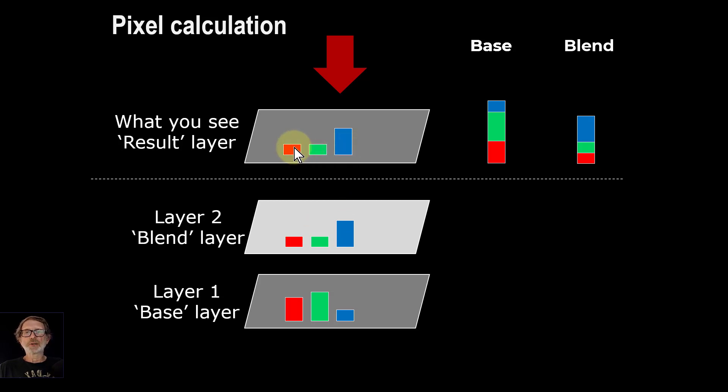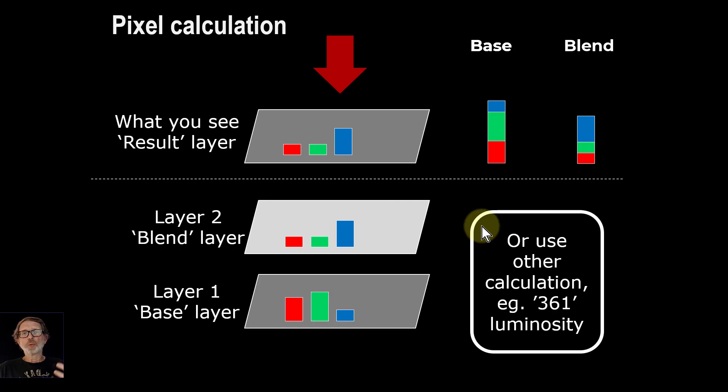There's also we can do calculations at the pixel layer level in all sorts of other ways. For example, doing luminosity, you can use the three of them together to calculate the overall brightness. And 361 is just a way of remembering the way that luminosity is normally calculated in Affinity Photo and other things. We've got 30% of red, 60% of green, and only about 10% of blue.